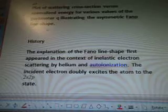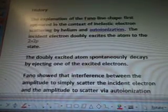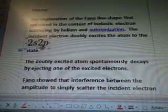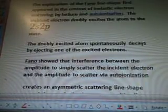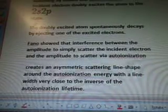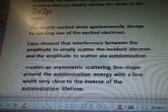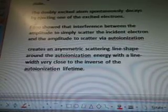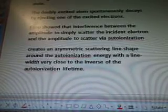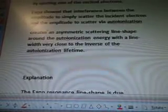History. The explanation of the Fano line shape first appeared in the context of inelastic electrons scattering by helium and auto-ionization. The incident electron doubly excites the atom to 2s2p state. The doubly excited atom spontaneously decays by ejecting one of the excited electrons. Fano showed that interference between the amplitude to simply scatter the incident electron and the amplitude to scatter via auto-ionization creates an asymmetric scattering line shape around the auto-ionization energy.